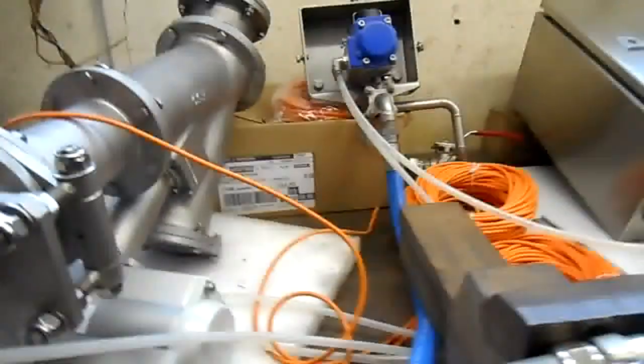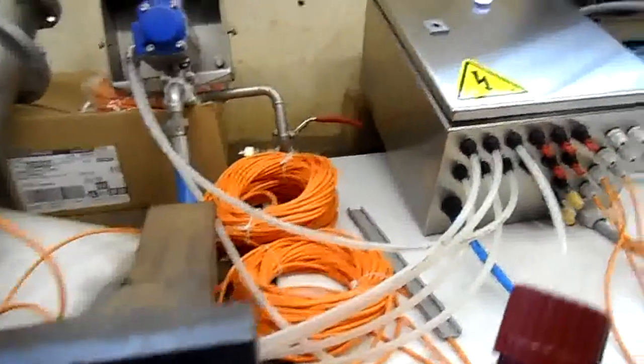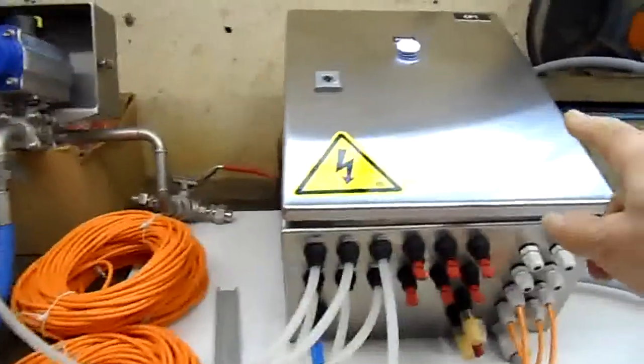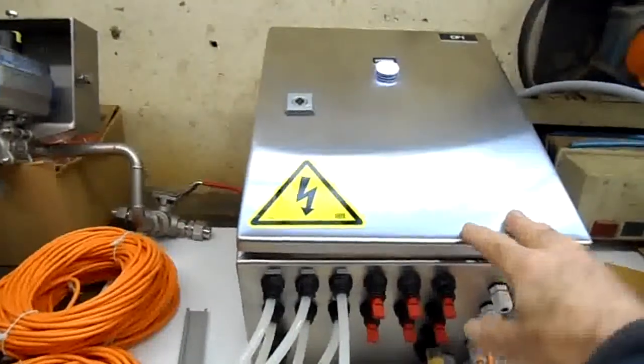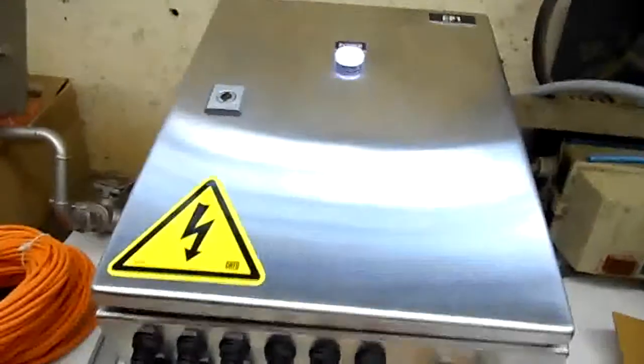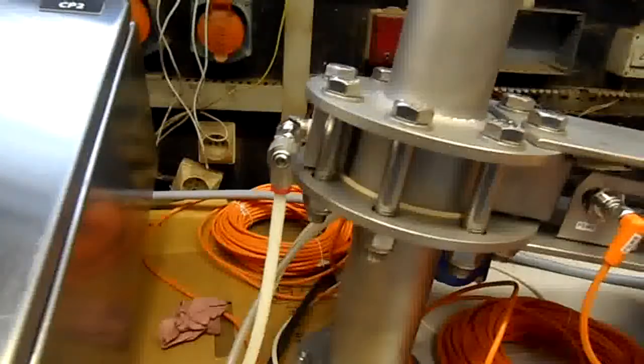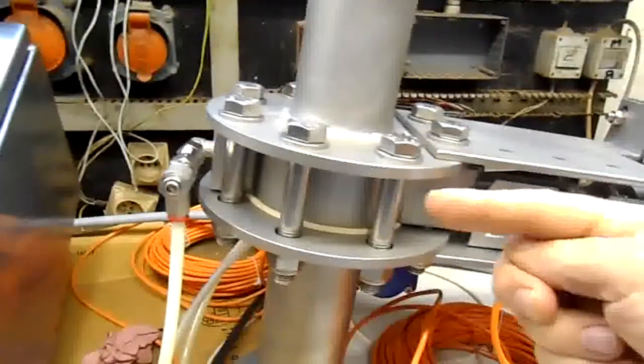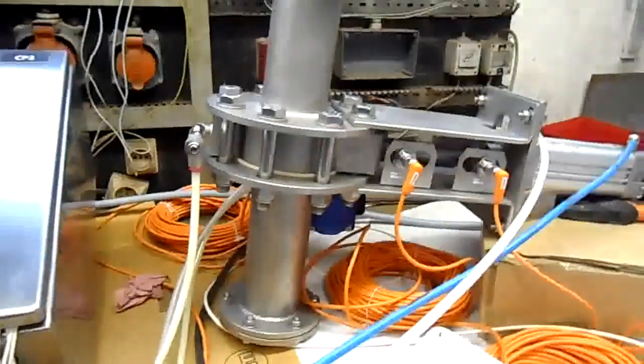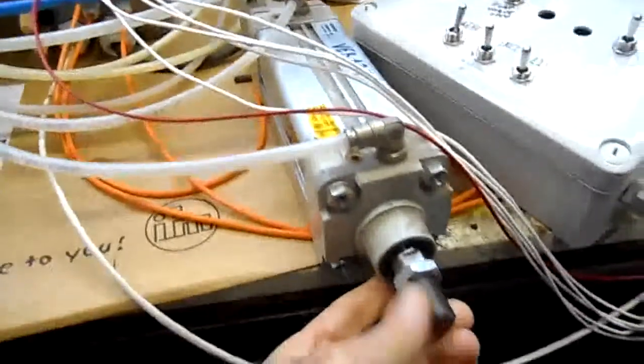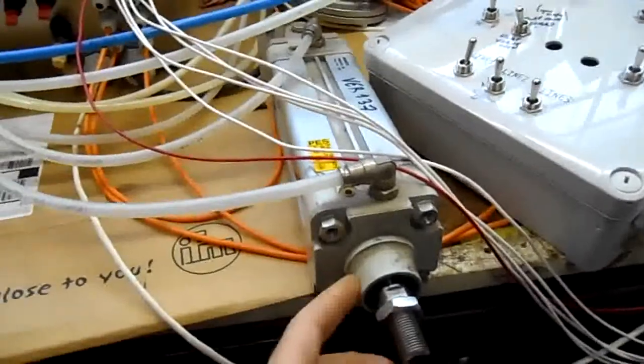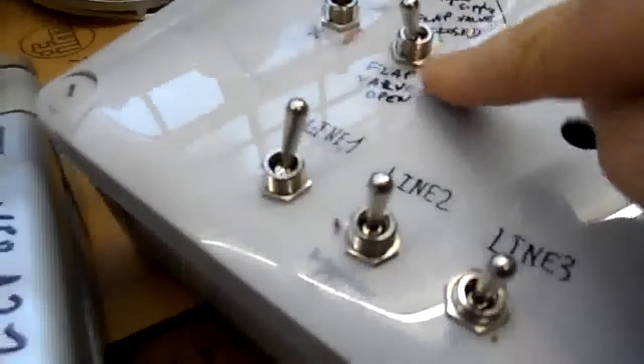I just give you some information about the installation. This is the box CP1, electromagnetic box CP1. This is CP2 here. This is the flap, the stop-pig valve. And this is the simulation for your supply about the flap valve. We have the flap valve here, closed or open, for simulation for us.